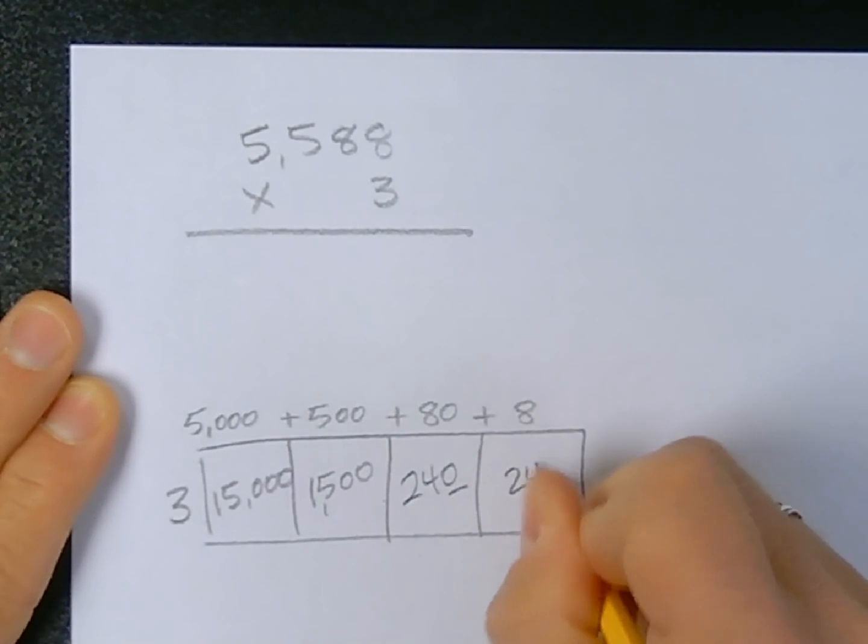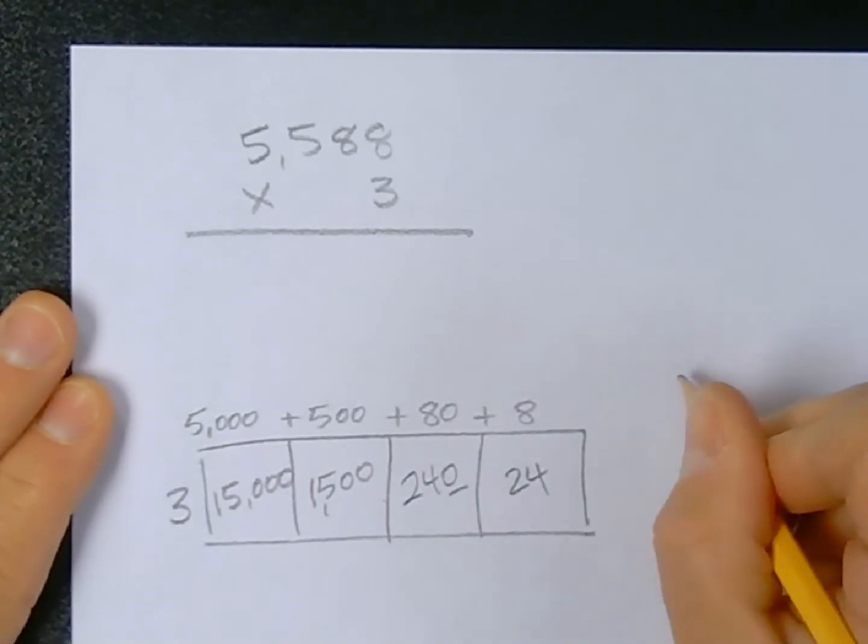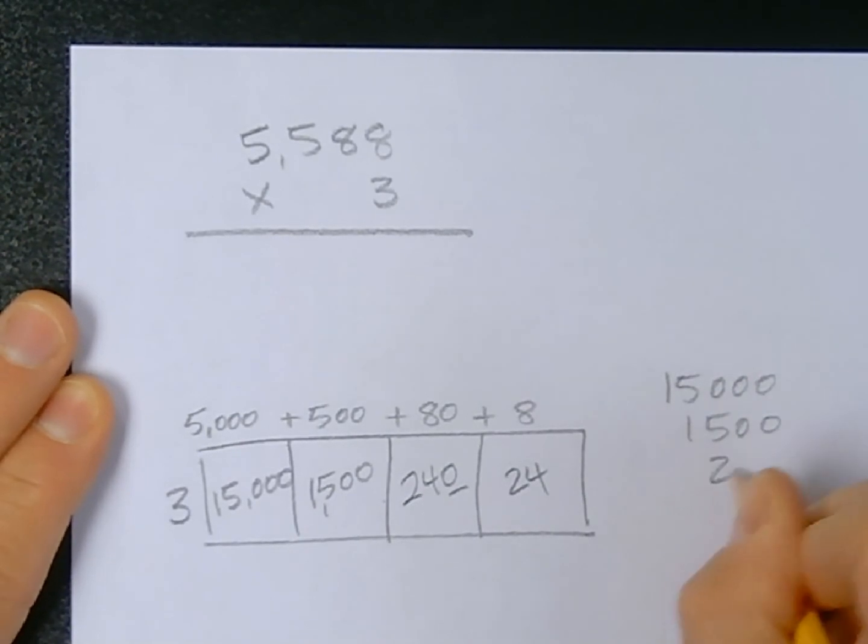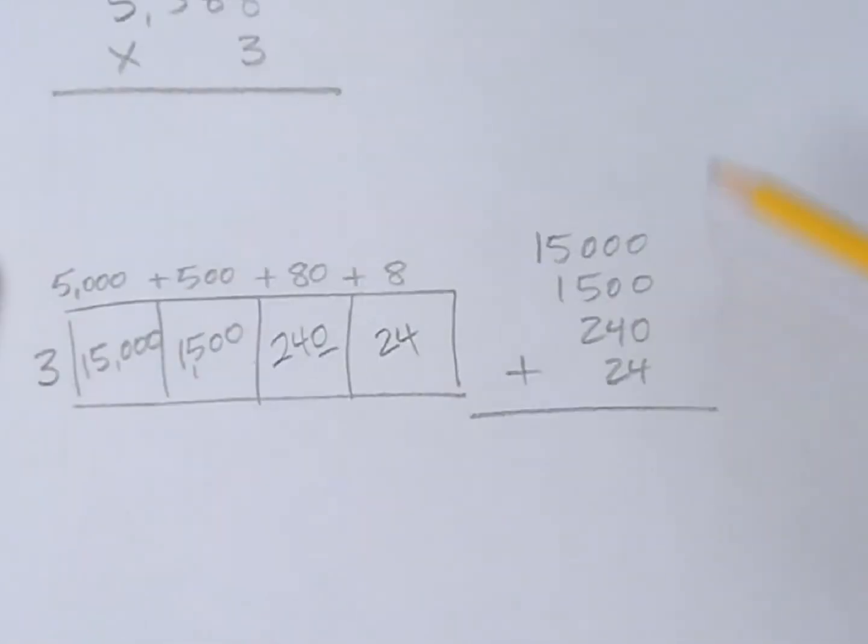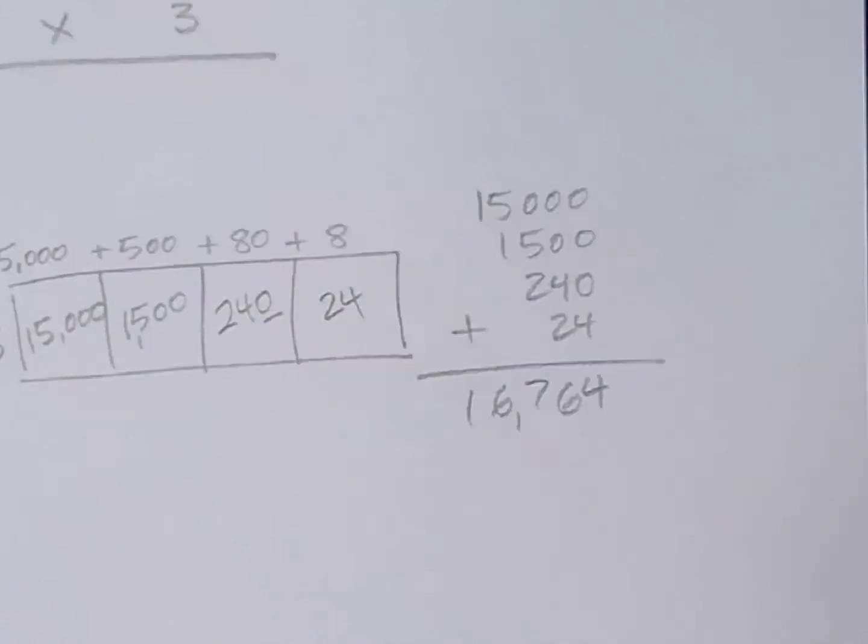There are my 4 partial products, and I've got to line up all my numbers so when I go to add them I have all my place values lined up. Then the calculations become super easy, so 16,764 is my product.